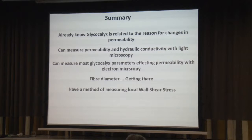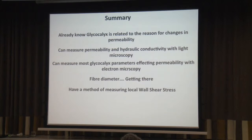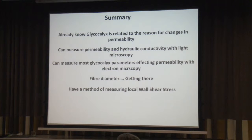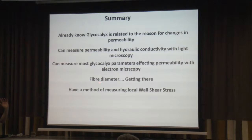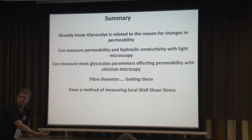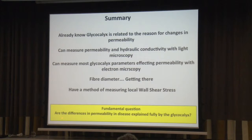As a summary: we already know the glycocalyx is related to the reason for changes in permeability, though we haven't confirmed much more than that. We can measure permeability and hydraulic conductivity with light microscopy — we can already do that. We can measure most of the glycocalyx parameters affecting permeability with electron microscopy, and we're getting there with the fibre measurements. In principle, we have the local wall shear stress — if we develop that technique more, we can do that at the same time as everything else, since it's still just fluorescent microscopy. Hopefully we can then tell whether the differences in permeability in disease are explained fully by the glycocalyx, or whether there are other things we need to take into account rather than fixating on one thing.